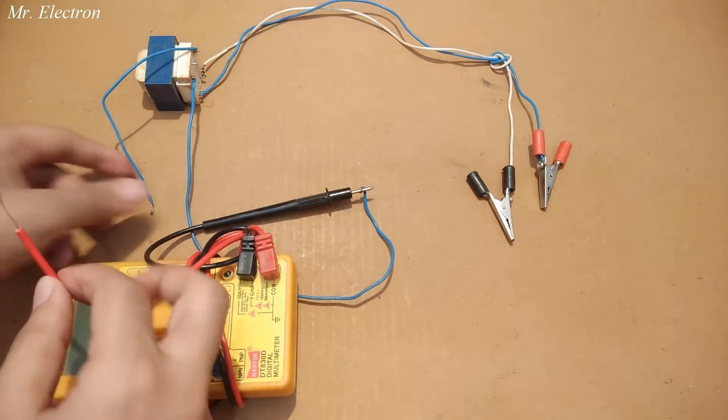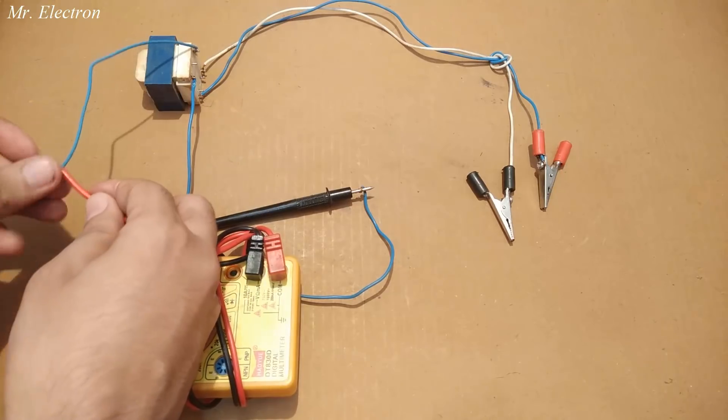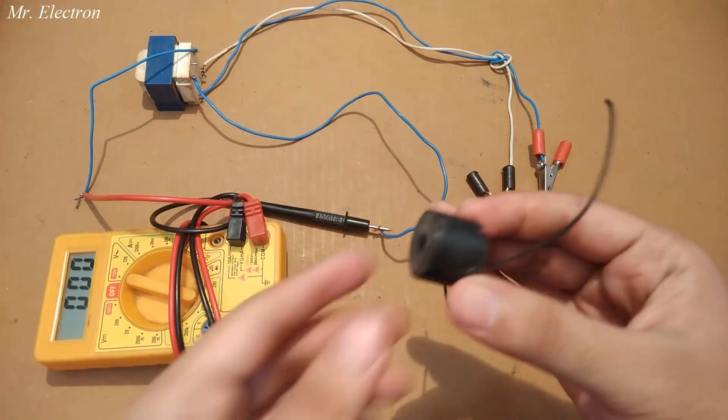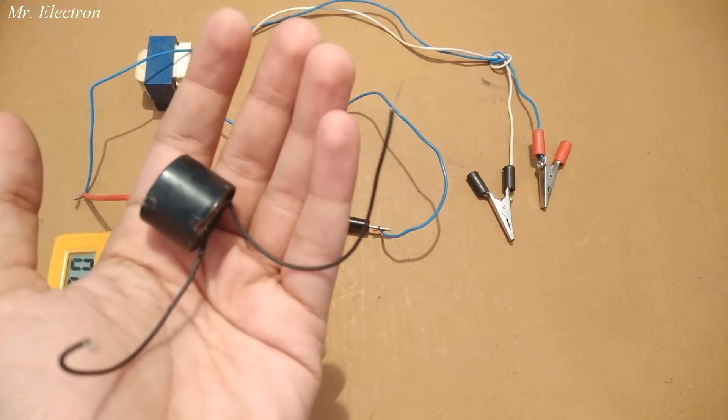The multimeter is being connected to the high voltage side of the transformer and is pointing towards the AC mode, while the DC source will be connected to the low voltage side with the clips.